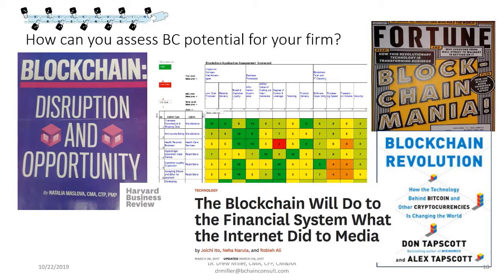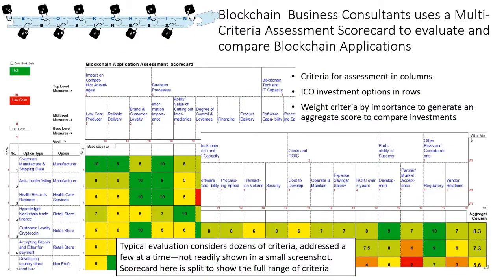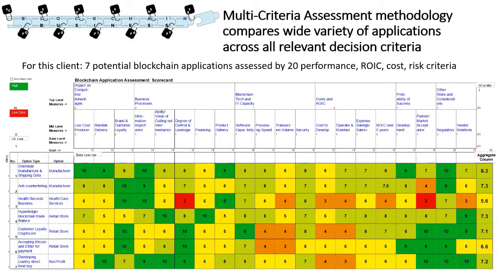So how can you assess blockchain's potential for your firm and evaluate the likely benefits you'll get? The methodology our company uses is multi-criteria decision analysis. There are so many factors and criteria to consider in deciding whether to pursue a blockchain application — and which application among dozens that might fit your firm — that a simple ROI calculation isn't sufficient. We need to figure out which application offers the most promising results, including return on investment but also other criteria like impact on competitive advantage. Here's an example of a client that had seven different blockchain applications assessed by 20 performance areas and criteria.